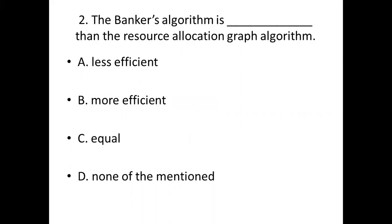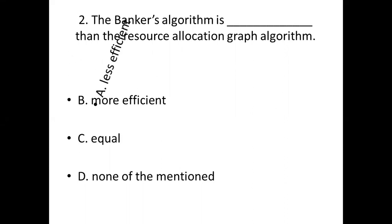Second bit: The Banker's algorithm is dash than the resource allocation graph algorithm. Option A: Less efficient. Option B: More efficient. Option C: Equal. Option D: None of the mentioned. Answer: Option A — Less efficient.